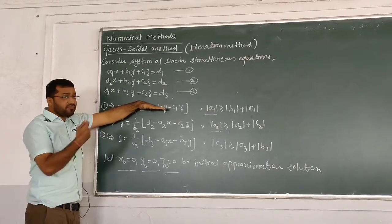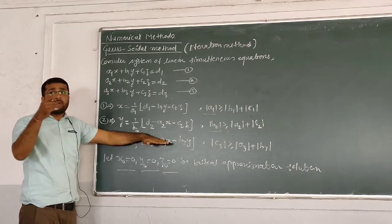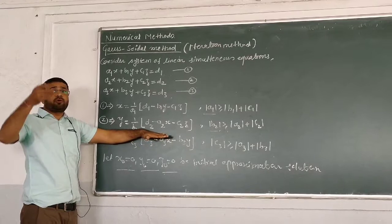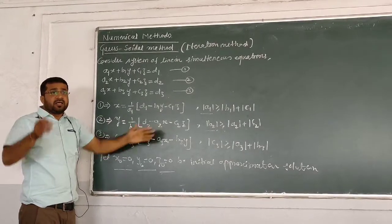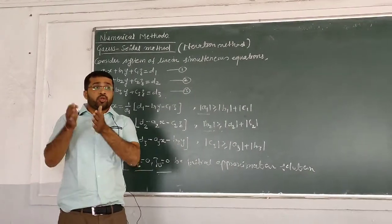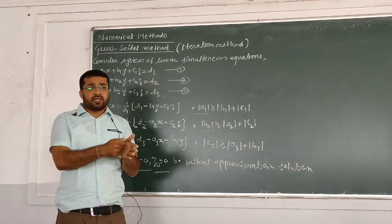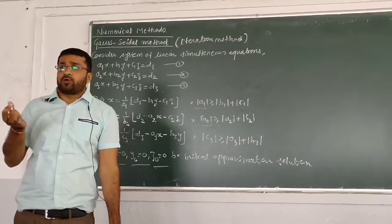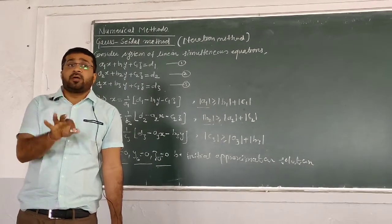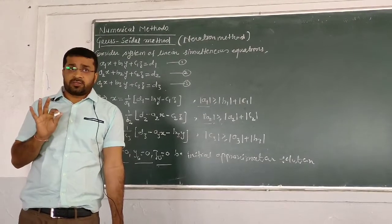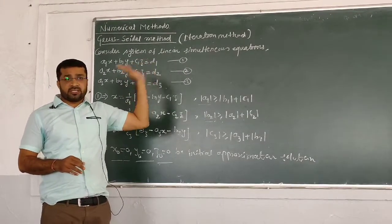Starting from the initial values, we compute x1, y1, z1 in the first iteration. Then x1, y1, z1 are used to compute x2, y2, z2 in the second iteration, and so on. When two consecutive sets of values — say xk, yk, zk — are equal, the iteration has converged. Generally this takes around 5 to 7 iterations depending on the problem.